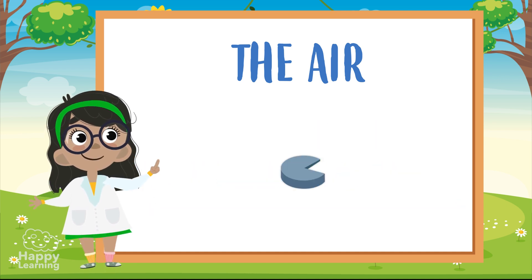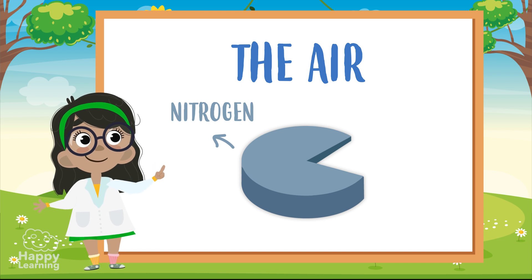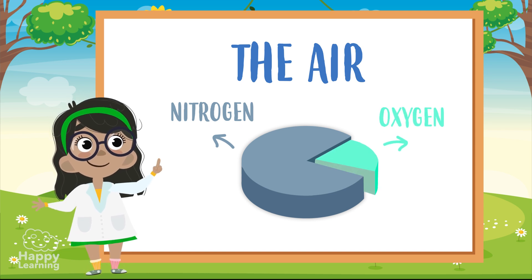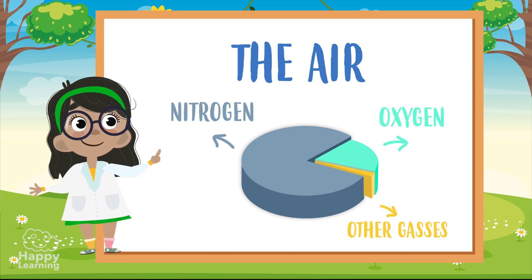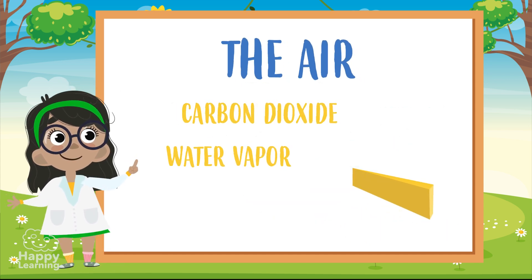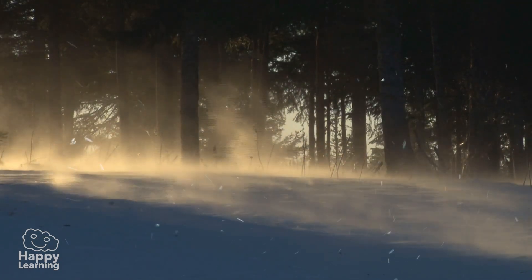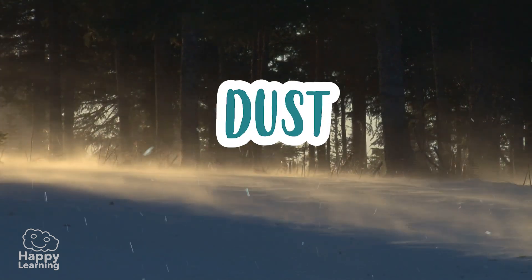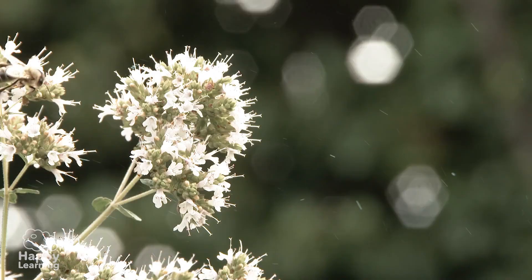The most abundant gas is nitrogen, followed by oxygen — our great friend that allows us to breathe. It also contains other gases such as carbon dioxide, water vapour, and a little bit of helium. In addition, the air can also carry things like dust, water droplets, and pollen.